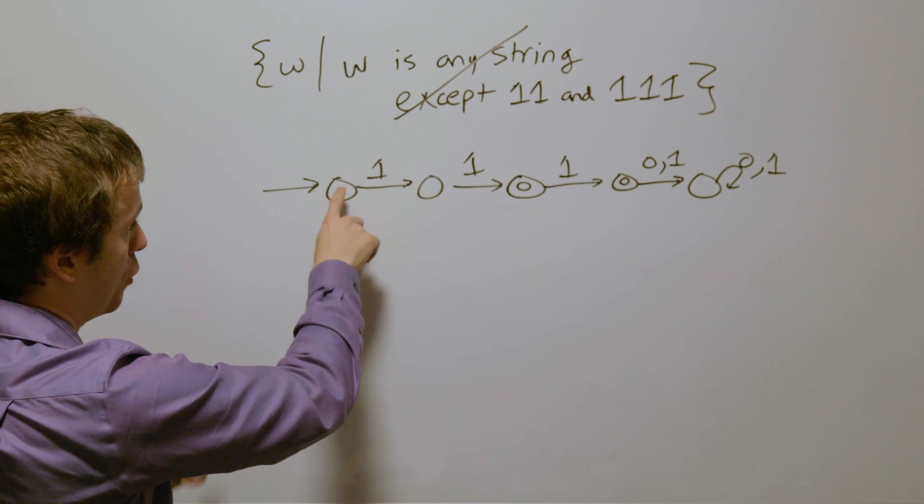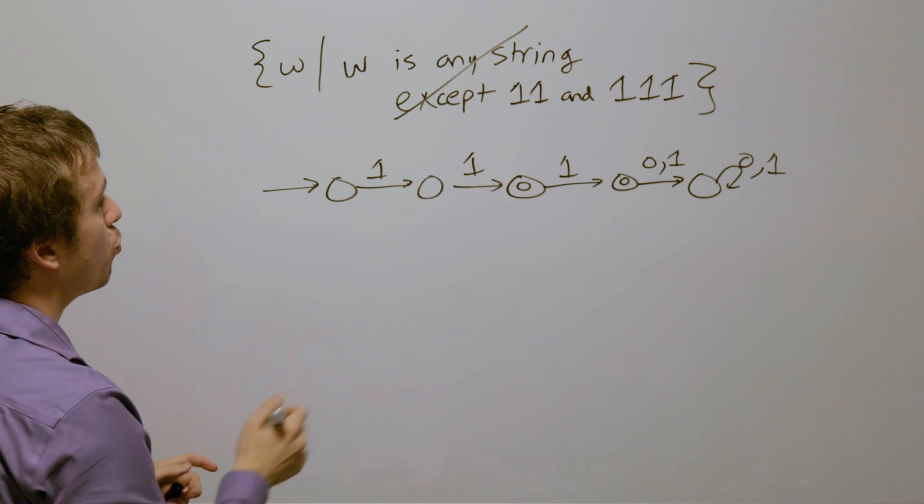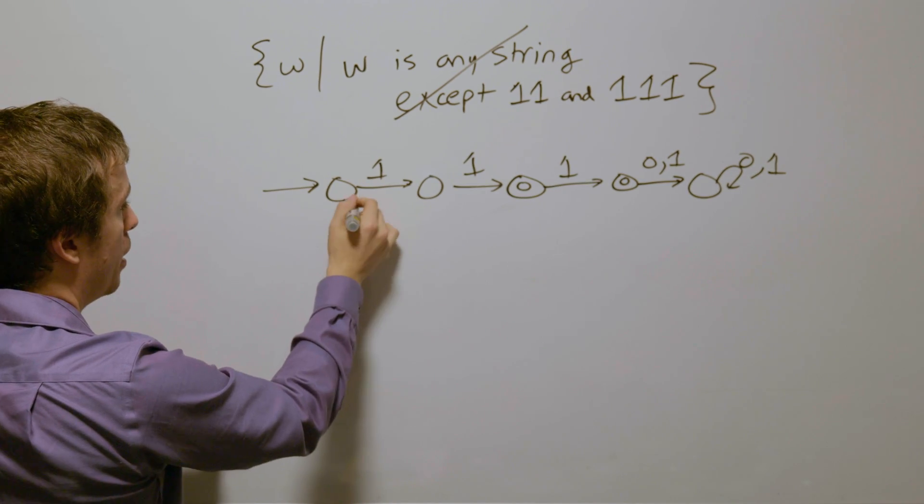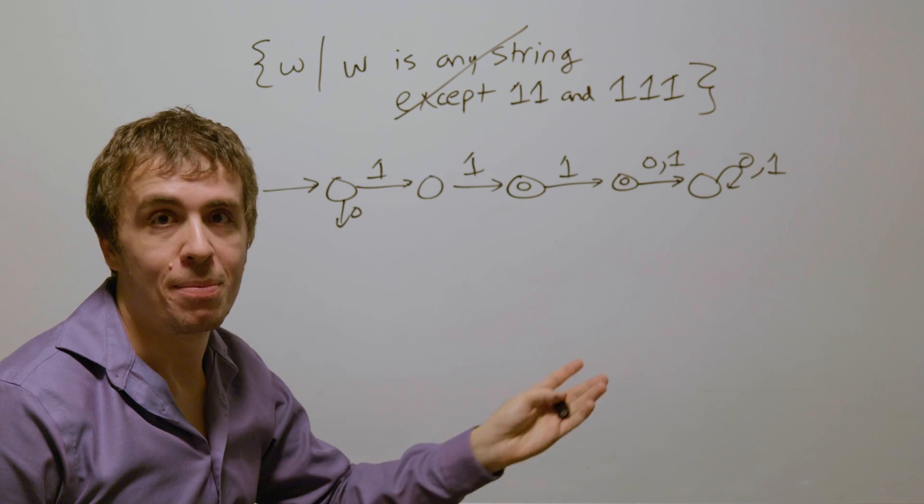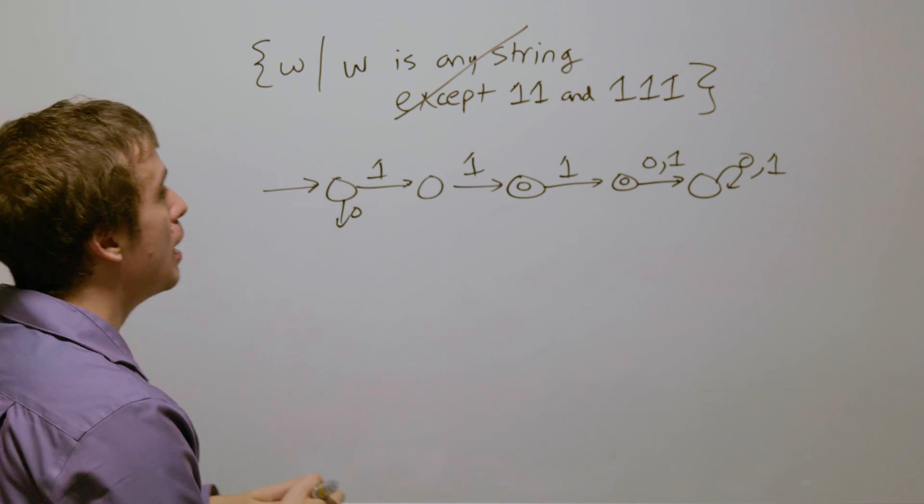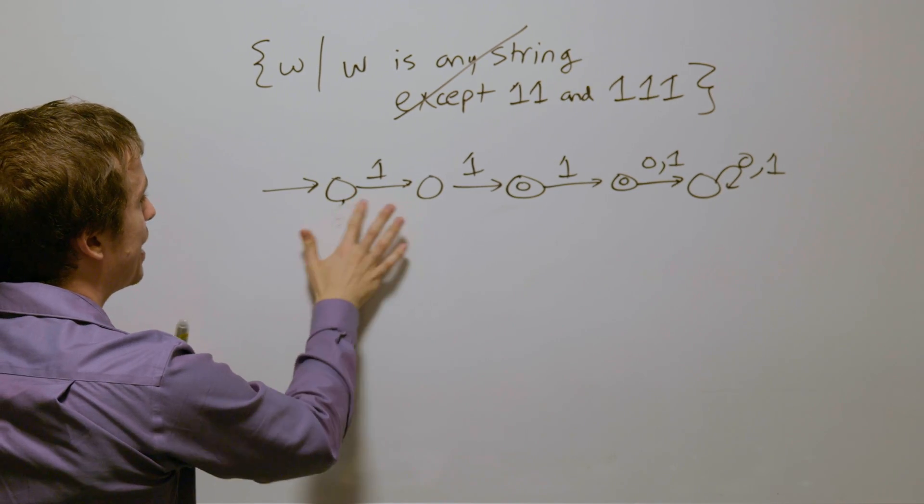Then what about all of those zero transitions? Well, if we read a zero here, it's not going to be 11 or 111 no matter what, because they don't have zero at all. And so therefore they need to go to the dead state as well.